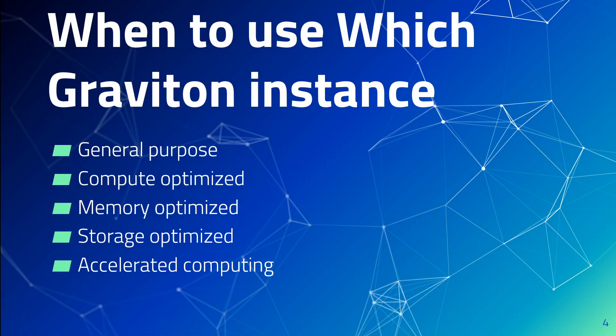So when exactly should we be using Graviton and when should we give it preference over other EC2 instance types? Graviton processors are used on more than one instance type — there are different types of instances, each optimized for a different use case. If you have microservices running like containers and small to medium sized databases as a backstore, then use general purpose Graviton. If your workload is compute intensive, such as video encoding, gaming, and HPC, then use compute optimized.